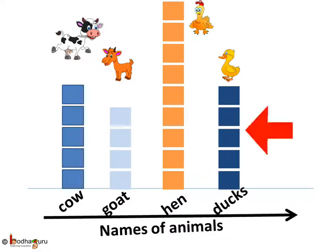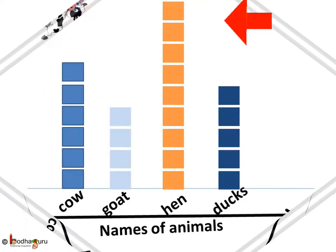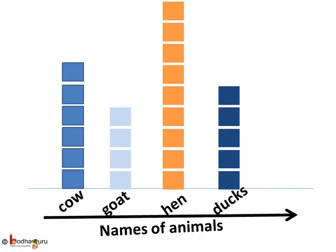To know the number of any animal, we count the boxes against its name. How many ducks? Five boxes in the column for ducks, so he has five ducks. How many hens? Nine hens. Now say he bought one more cow — we add one box in the column for cow to represent the sixth cow.